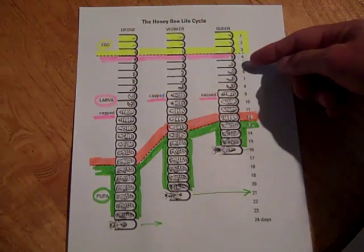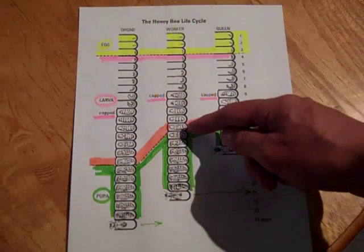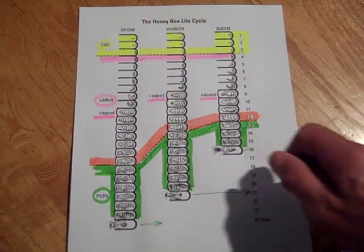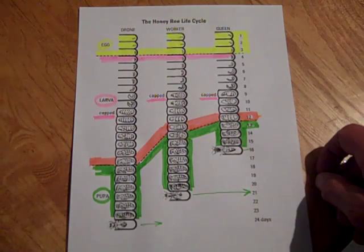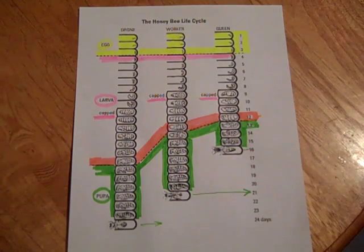From day 4 to 12 for the queen, 13 for the worker, and 17 for the drone bees, they are in the larva stage and then after that they enter into the pupa stage.